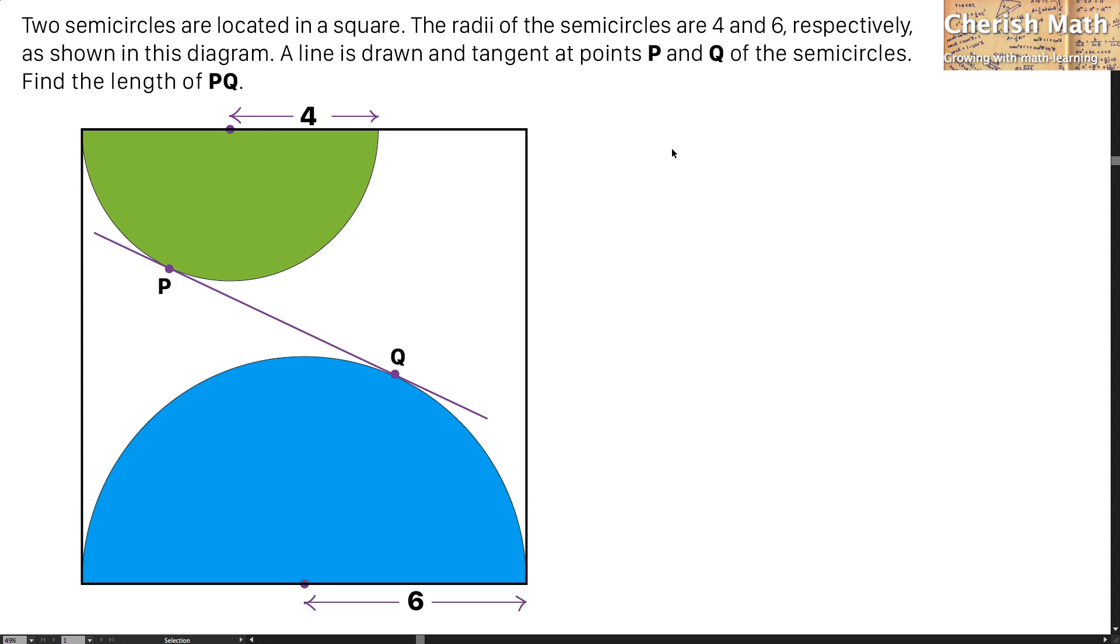I begin with drawing the radii of the two semicircles, connecting from the center to the point of tangent. And this is how it goes.